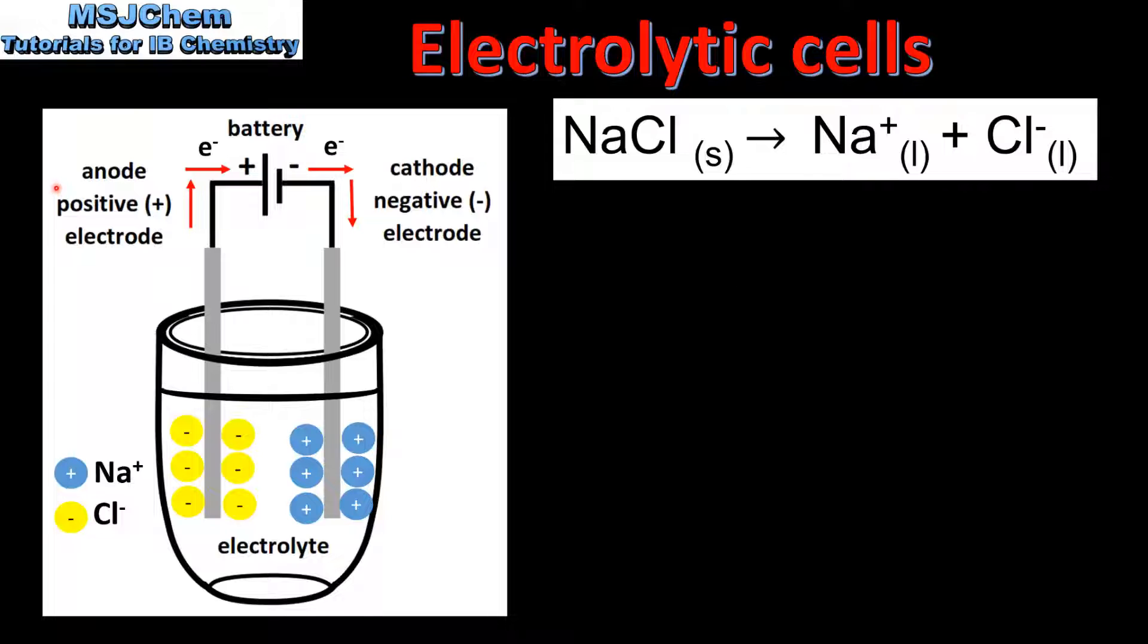On the left we can see a diagram of the electrolytic cell. The electrolyte which is molten sodium chloride consists of positive sodium ions and negative chloride ions. The negative chloride ions are attracted to the positively charged anode, and the positive sodium ions are attracted to the negatively charged cathode.